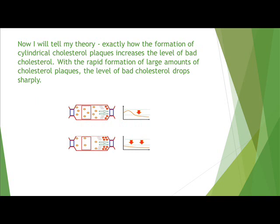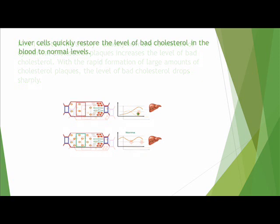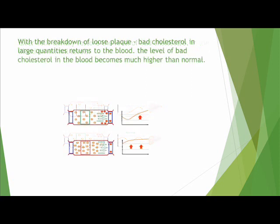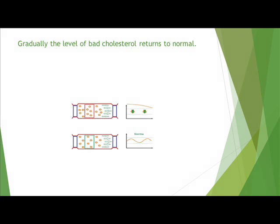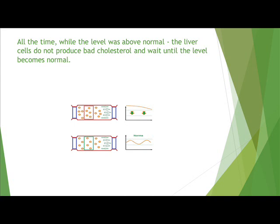Now I will explain my theory of exactly how the formation of cylindrical cholesterol plaques increases the level of bad cholesterol. With the rapid formation of large amounts of cholesterol plaques, the level of bad cholesterol drops sharply. Liver cells quickly restore the level back to normal. When the loose plaque breaks down, bad cholesterol returns to the blood in large quantities and the level becomes much higher than normal. All the time the level is above normal, liver cells do not produce bad cholesterol and wait until the level returns to normal.